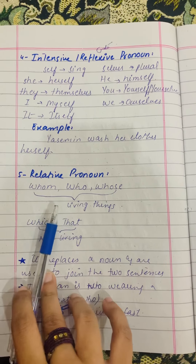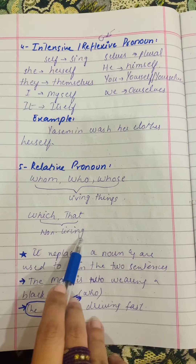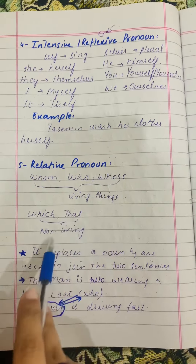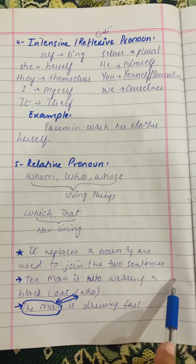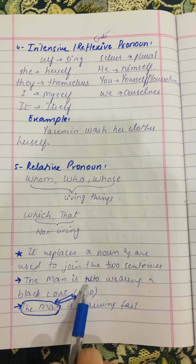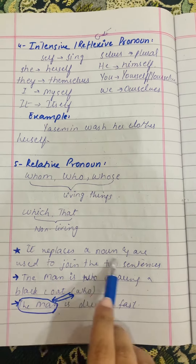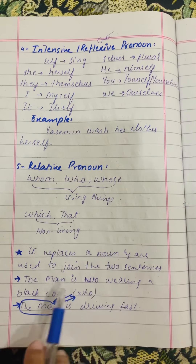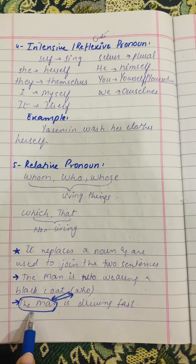Number five — relative pronouns. These are similar to interrogative pronouns because the wh-family appears, but they differ in that 'whom,' 'who,' and 'whose' are used for living things, while 'which' and 'that' are used for non-living things. Relative pronouns replace a noun and are used to join two sentences. For example: 'The man is wearing a black coat' and 'The man is driving fast' are joined as: 'The man who is wearing a black coat is driving fast.'